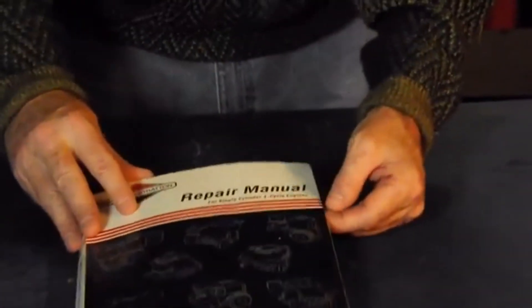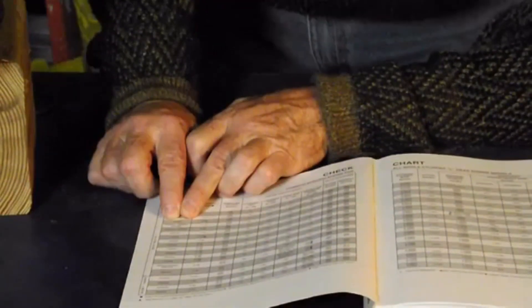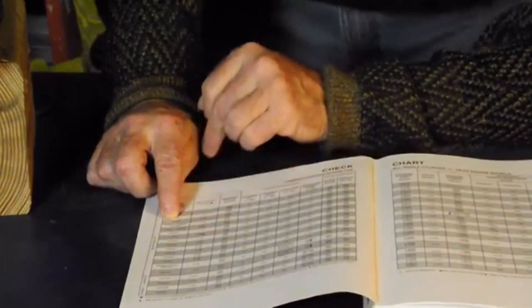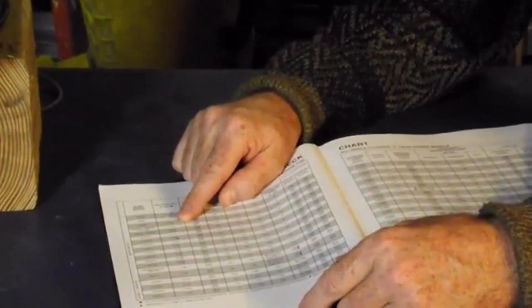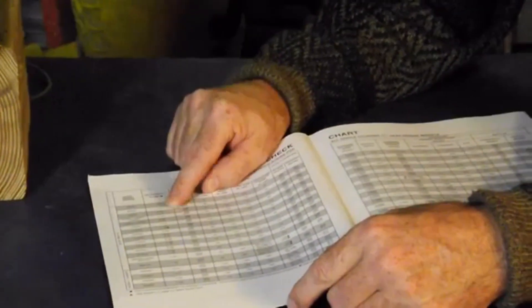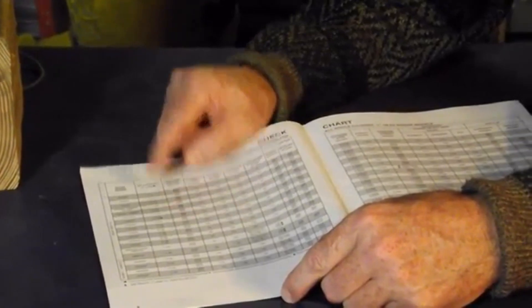Again in the manual, the first page talks about your series of engine. Now ours is a 90,000 series. And it tells us, for example, if it were a horizontal crankshaft, it would have 21 ounces of oil. If it's vertical, it would take 18 fluid ounces of oil.